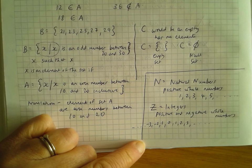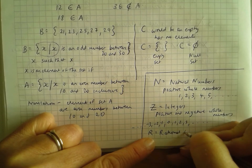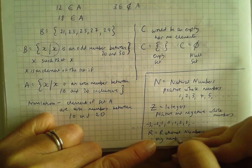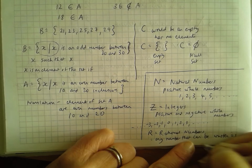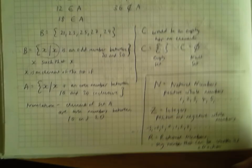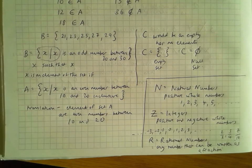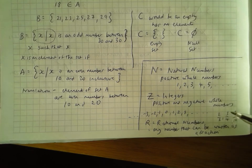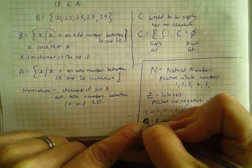Then we've got R, which is real numbers, and Q, which is the letter for rational numbers — any numbers that can be written as a fraction. So for instance, two thirds, three quarters, seven tenths, and so on. So N is natural numbers (positive whole numbers), Z is integers (positive and negative whole numbers), and Q is the set of rational numbers.